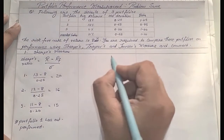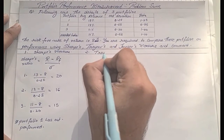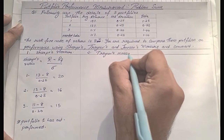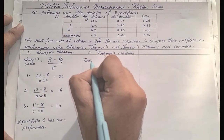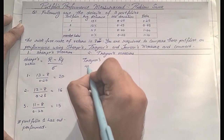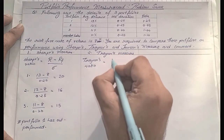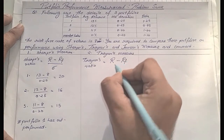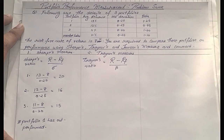Now let us see the second method, known as Treynor's measure. The Treynor ratio formula is similar with just one change: Treynor Ratio = (R − RF) / β, that is average return minus risk-free return divided by beta. So in Sharpe's measure we use standard deviation; under Treynor's we use beta.